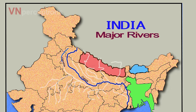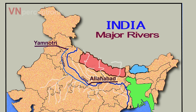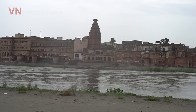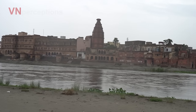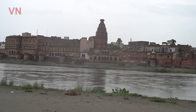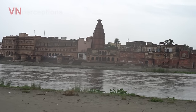Yamuna is the second largest tributary of Ganga. River Yamuna originates at Yamunotri and joins Ganga at Allahabad. It is the longest river in India which does not directly flow into the sea.